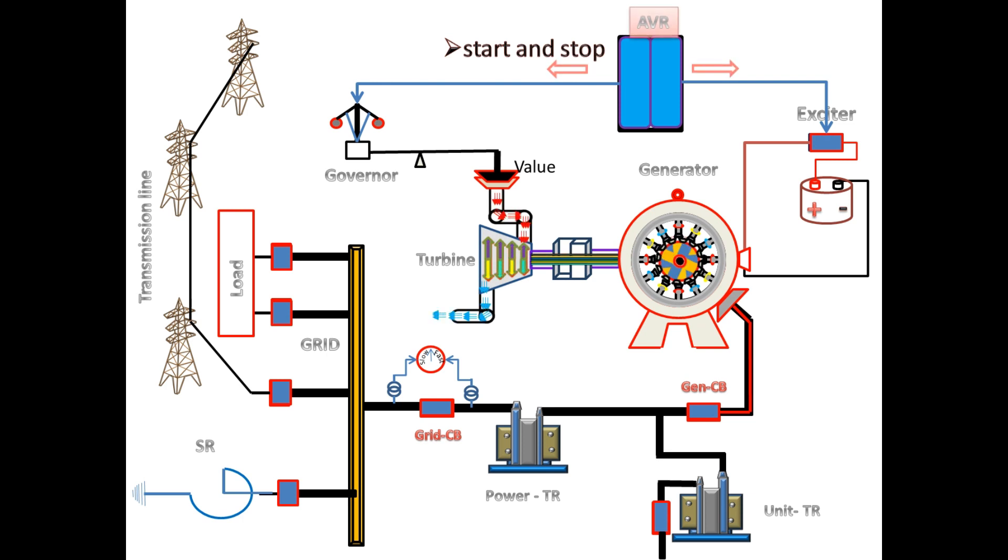In this time, over flux is produced on the generator. Second, failure of AVR, that is Automatic Voltage Regulator, can also cause the over flux. Third, sometimes the manual operation of generator leads to over flux.